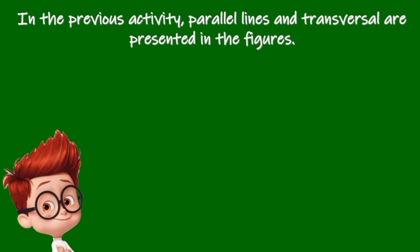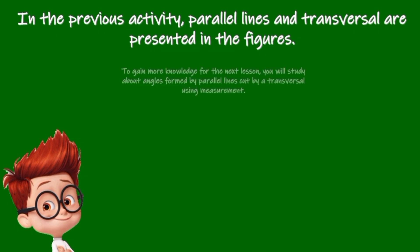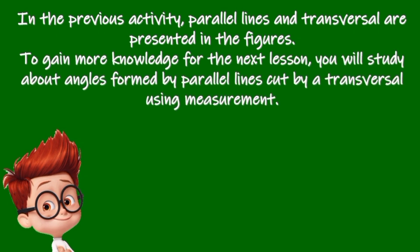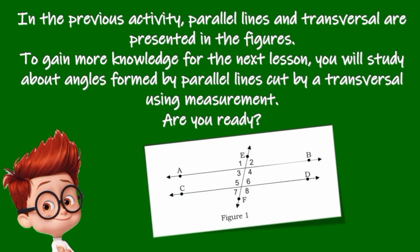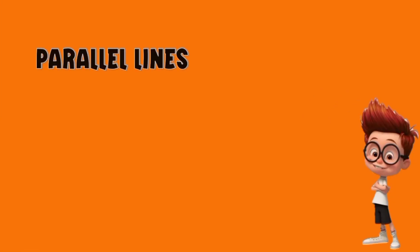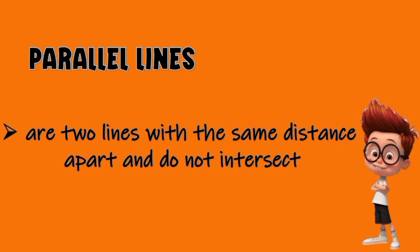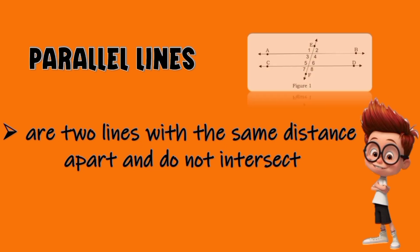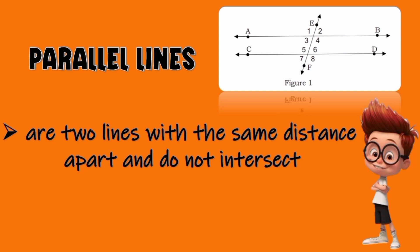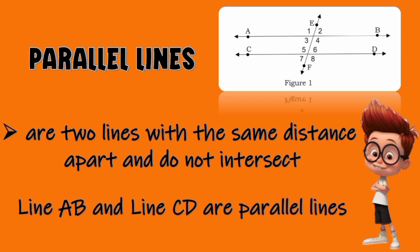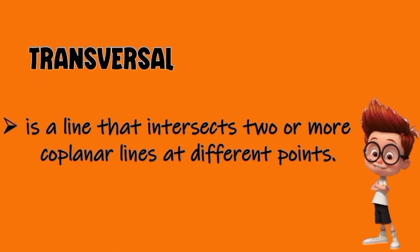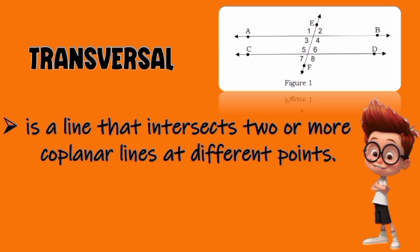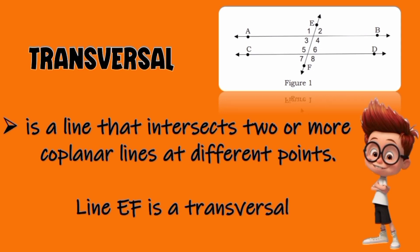In the previous activity, parallel lines and transversal were presented in figures. Parallel lines are two lines with the same distance apart that do not intersect. Based on the figure, line AB and line CD are parallel lines. A transversal is a line that intersects two or more coplanar lines at different points. In our figure, line EF is the transversal.